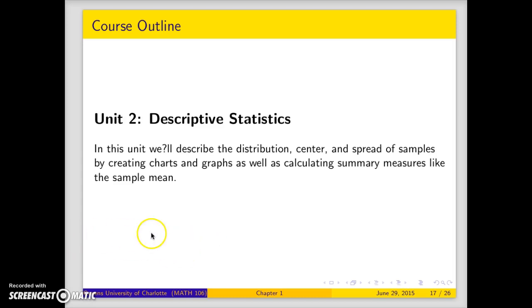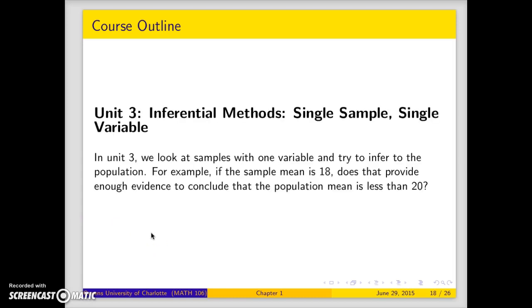And then the third unit we'll look at is samples that have one variable and then infer it to the population. So, we will be doing things like if the sample mean is 18, can we conclude that the population mean is less than 20?